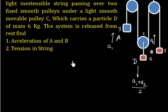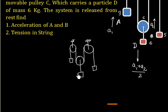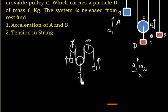Let me explain again. We have two fixed pulleys and two hanging masses. If mass A moves up by A1 and mass B moves up by A2, that portion of the string is freed by A1 plus A2. Since pulley C hangs between both sides of the string, it only descends by half — so the acceleration of D is (A1 + A2)/2.